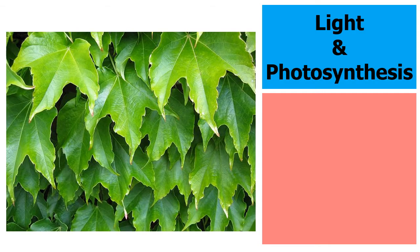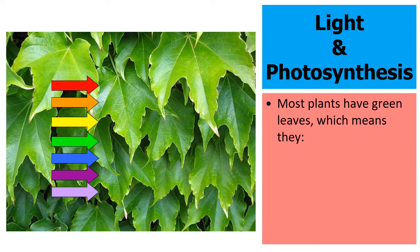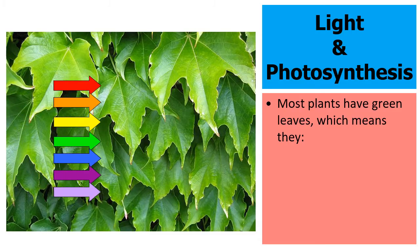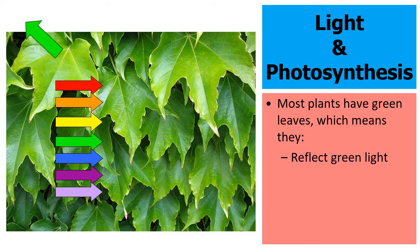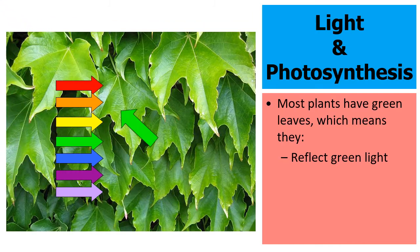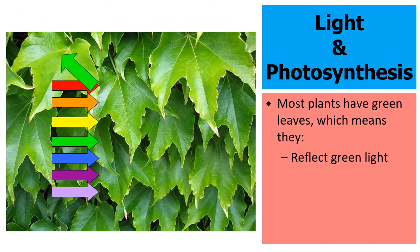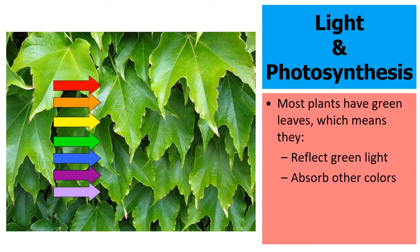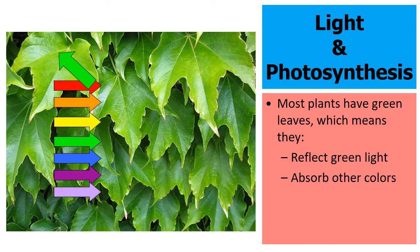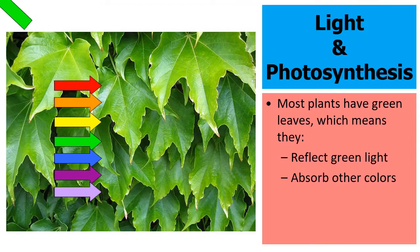When we relate this to photosynthesis, most plants have green leaves. They appear green because they're reflecting green light. It's the other colors — red, orange, yellow, blue, indigo, and violet — that are being absorbed into the leaves, and it's really those other colors that are going to drive and power photosynthesis.